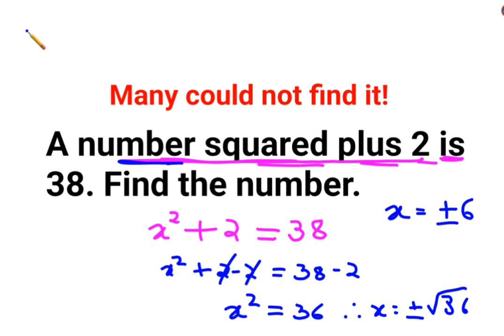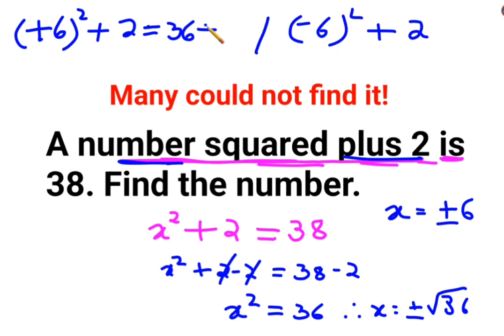A number. The number is what? Either it is plus 6 the whole square or we will say minus 6 the whole square. Then we are saying plus 2. So we are adding 2 to both sides. So here we are getting what? 36 plus 2. That gets you 38 sorry.